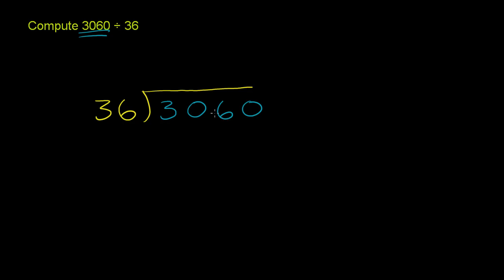Well, sure, 306 is larger than 36. And if we were to estimate it, let's see. 30 would go into 300 10 times. But this is larger than 30, so it's going to go fewer times. Maybe it's 9? I'm not sure. Let's try it out. Let me try it out over the side. What is 36 times 9?